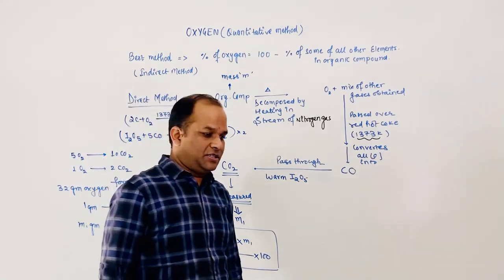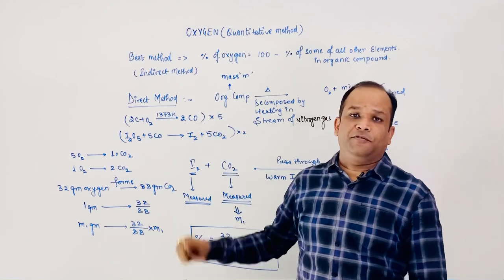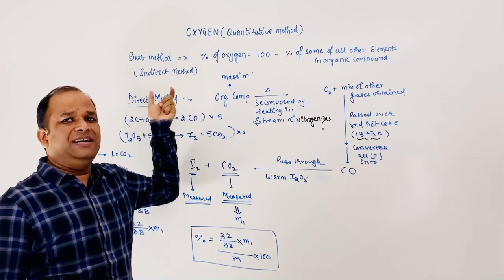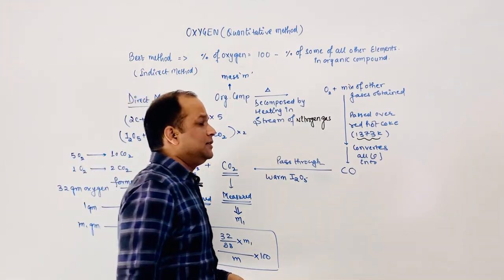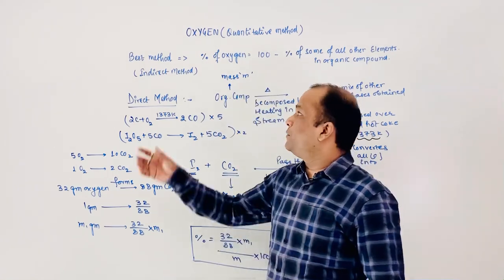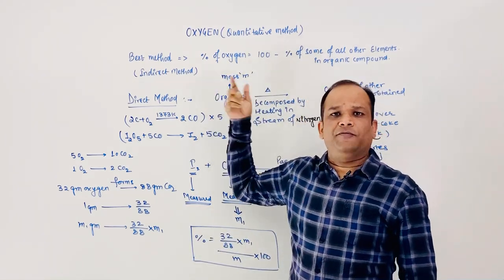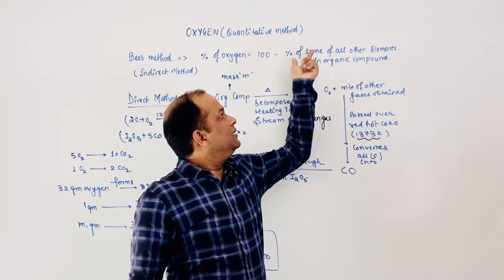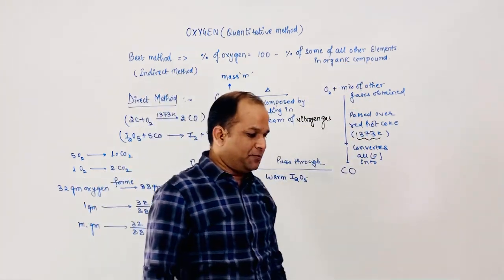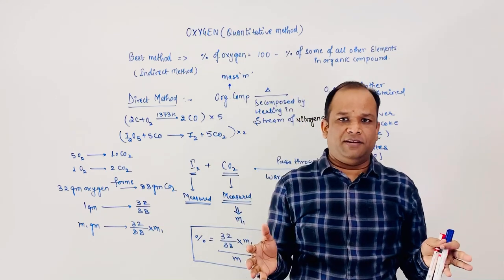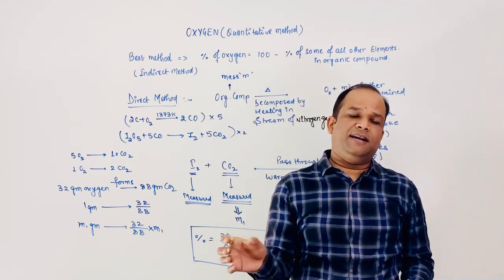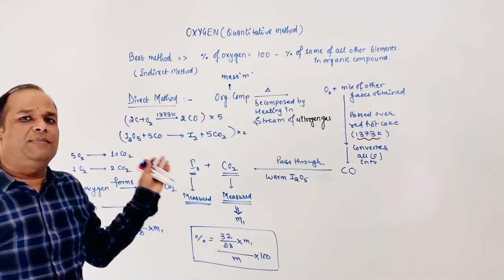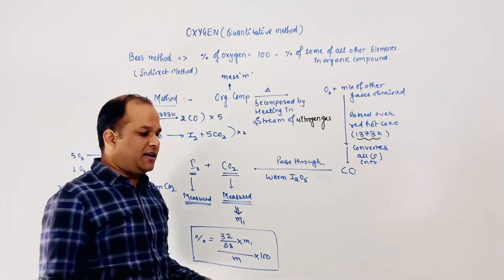The next topic is quantitative estimation of oxygen in organic compounds. The most common indirect method to find out the percentage of oxygen is: since we have found out all the percentages of other elements, it is 100% minus the sum of the percentages of all other elements in the organic compound. This is the easiest method.